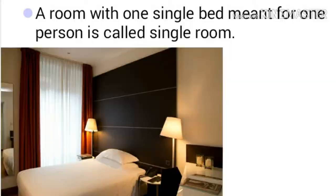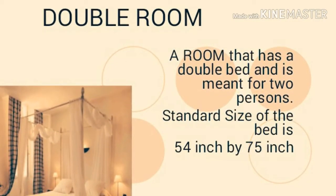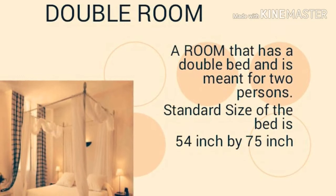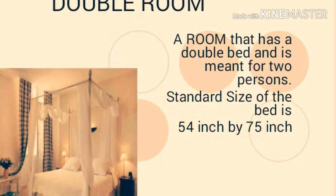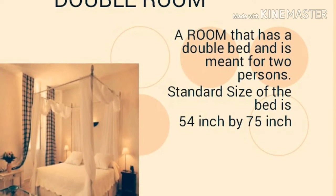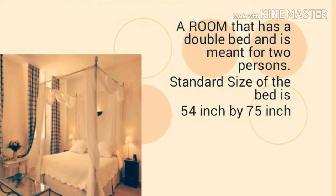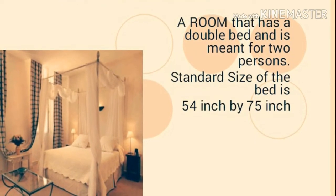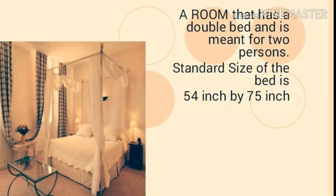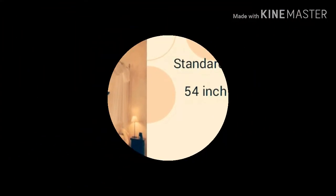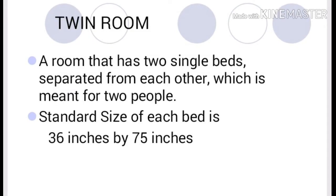The second room is the double room — a room that has a double bed and is meant for two persons. The bed accommodates two people, and that room is called a double room. The bed size in a double room is 54 inches by 75 inches.